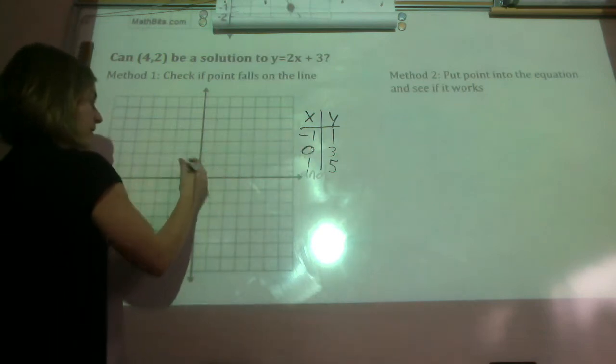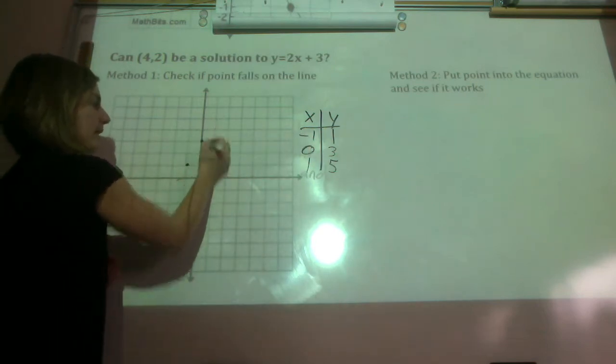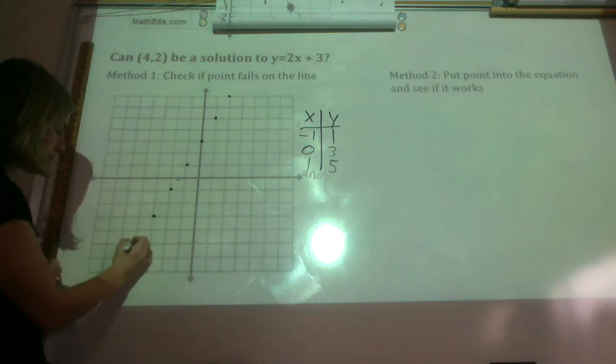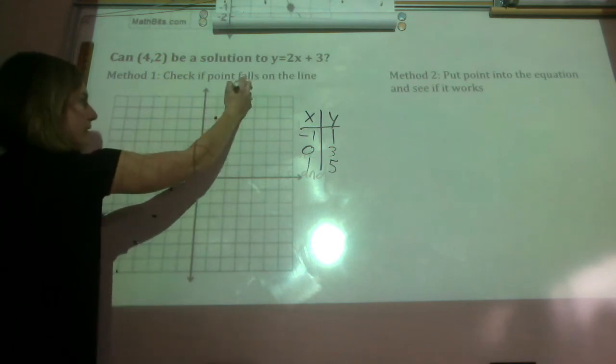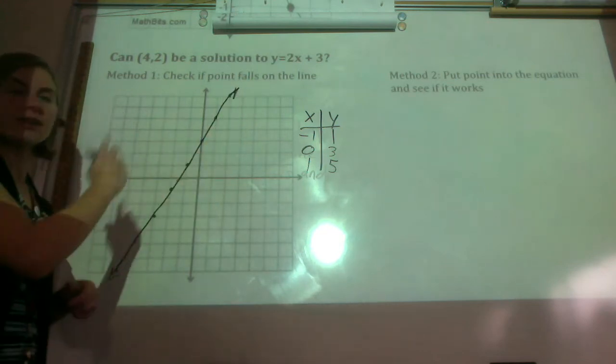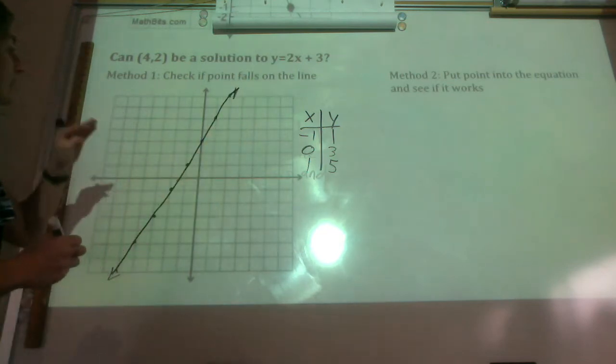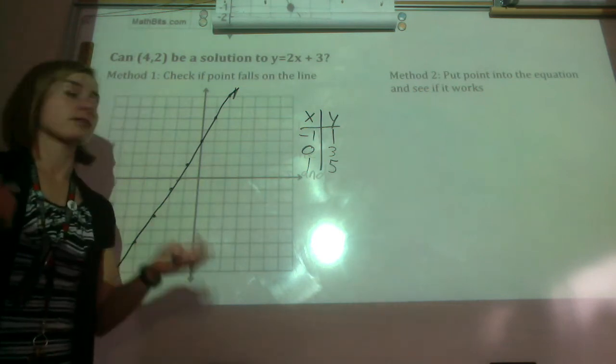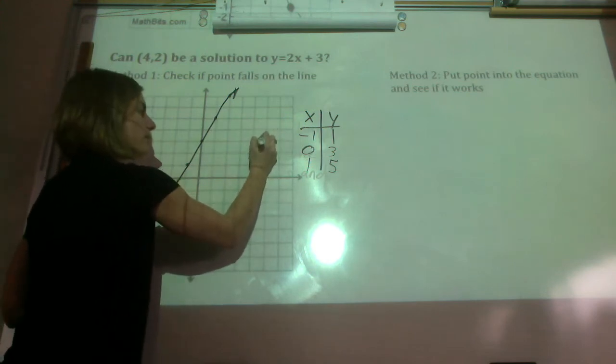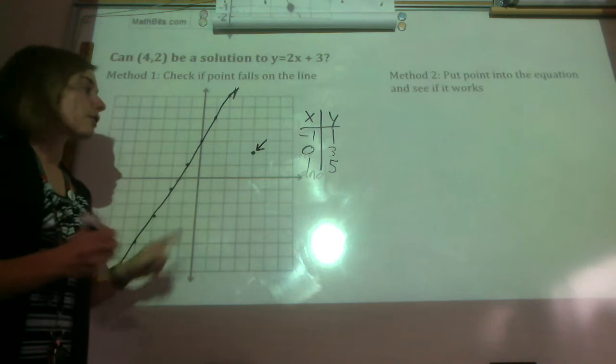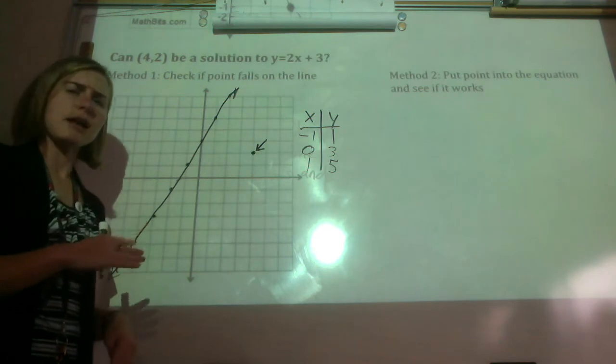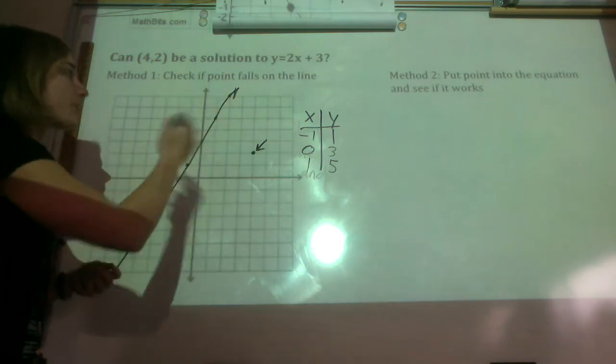Let's put them on our graph. (-1,1) is right there. 0 up to 3. And then 1 up to 5. So our line, and you can see a pattern and it always continues on because it's linear. We can see our line. If you have a ruler, you can draw it straighter than that. Now we need to see if the point (4,2) works. So where is point (4,2)? Well, 4 is over here and up here. We're wondering if this point right here is a solution to this equation. Well, if it's a solution to the equation, it should be on the line. And it's not on the line. So that tells us that this is no, not a solution.